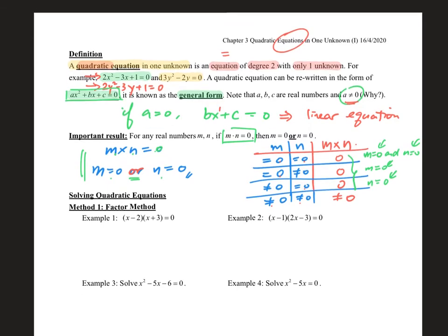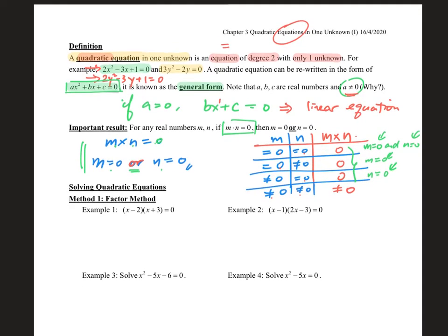After understanding this idea, we can see how this method helps us solve quadratic equations. For example in example 1 — in general form. The key is: if you can write it as a product equal to 0, by using the important result you can say x minus 2 is 0 or x plus 3 is 0, giving x equals 2 or x equals minus 3. The trick is: write as product equals 0, then split into two separate equations.